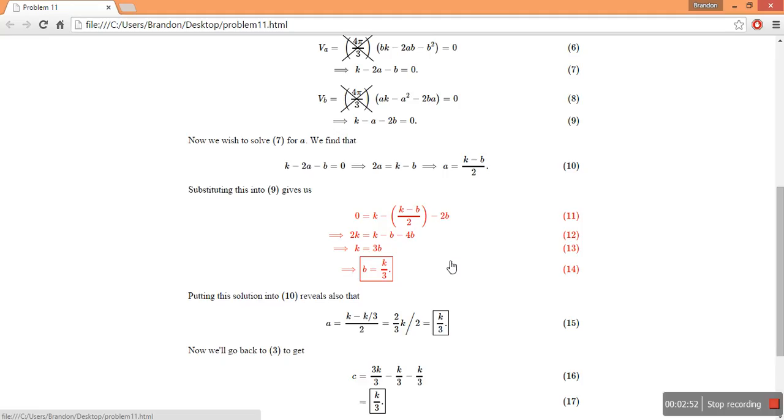So since we know what b is, we can substitute that back in to 10 up here. And we find that a is also k on 3.